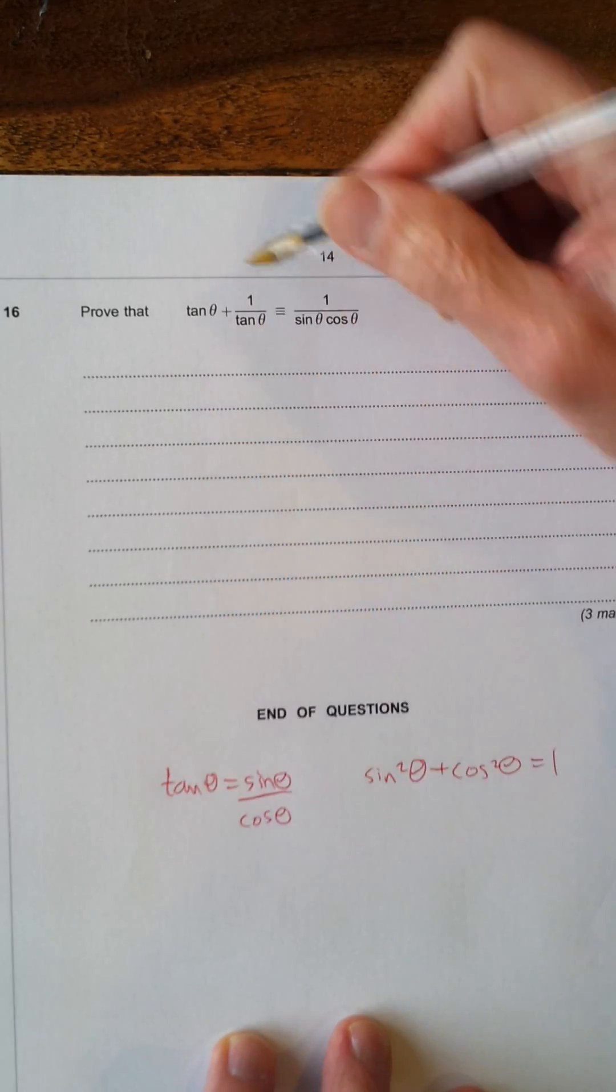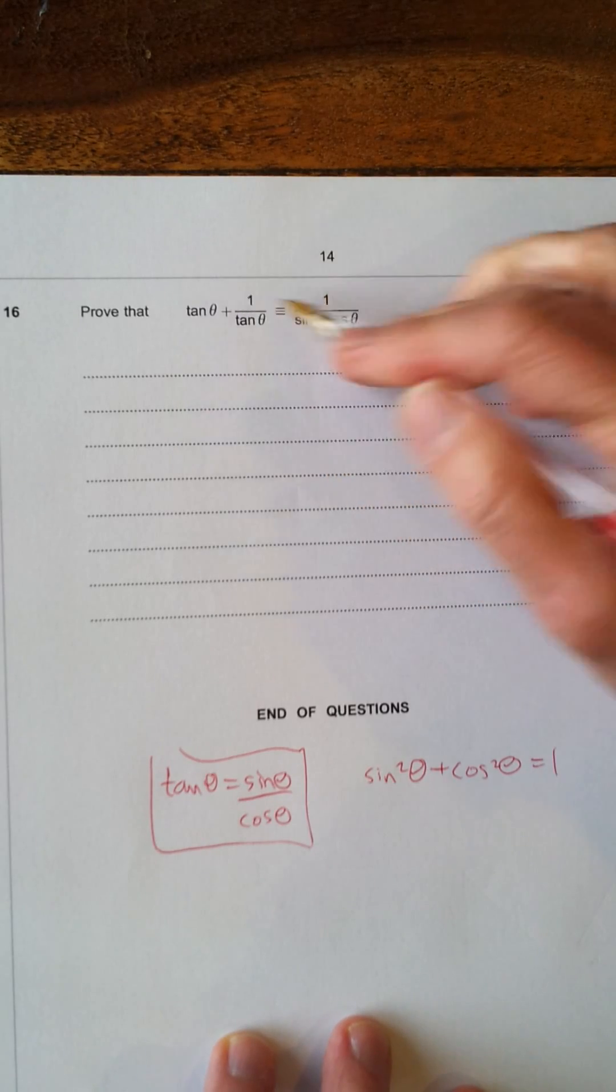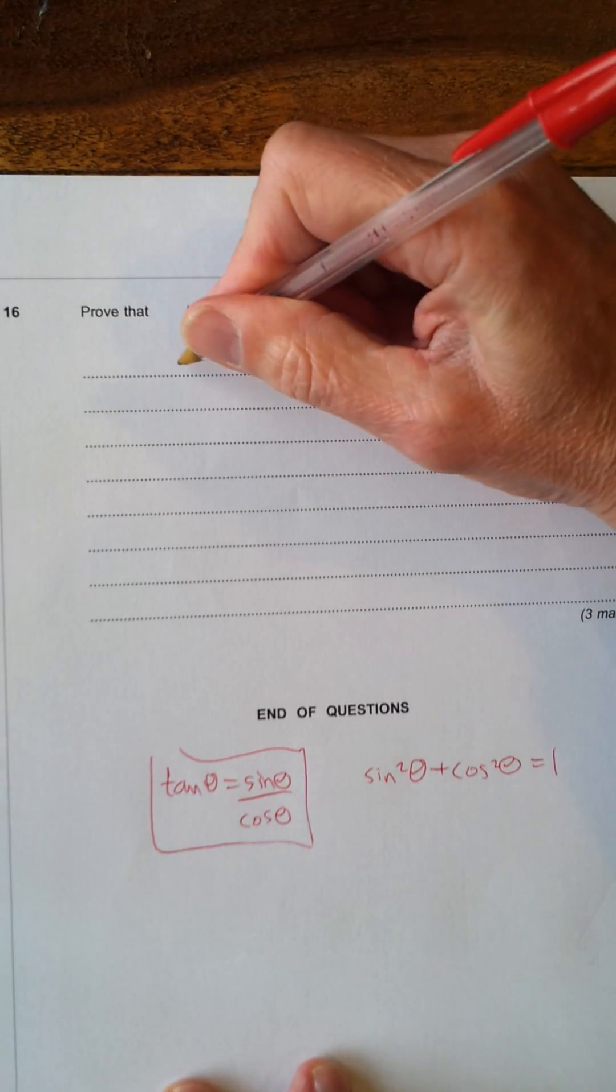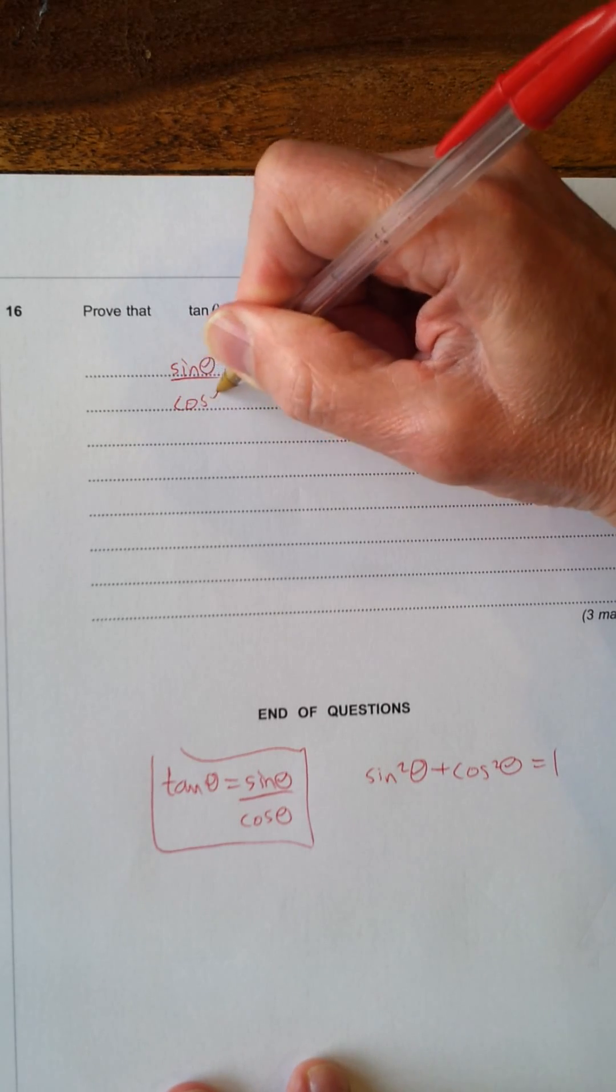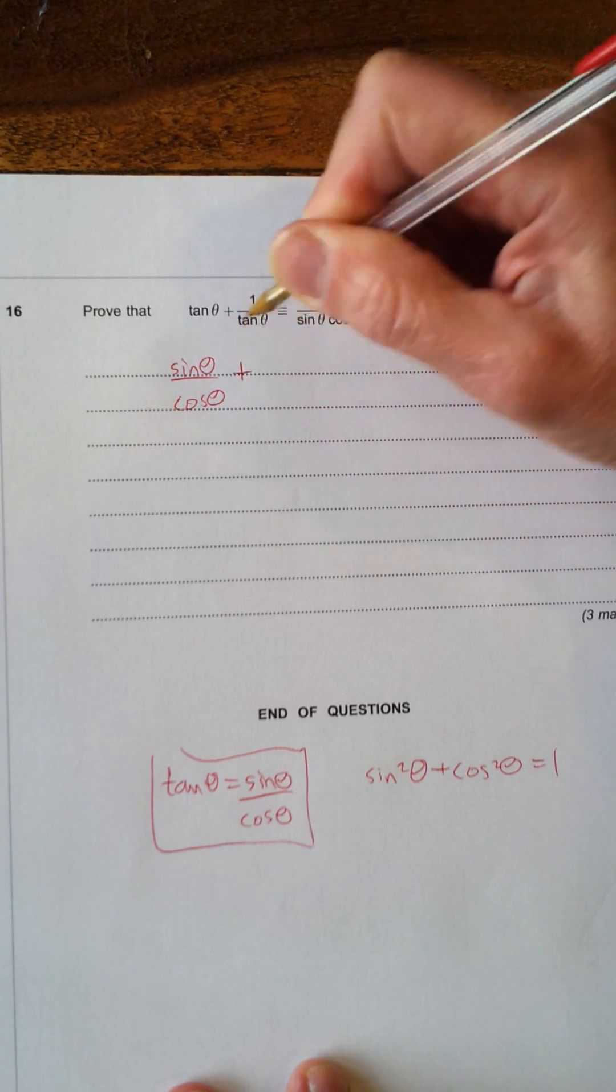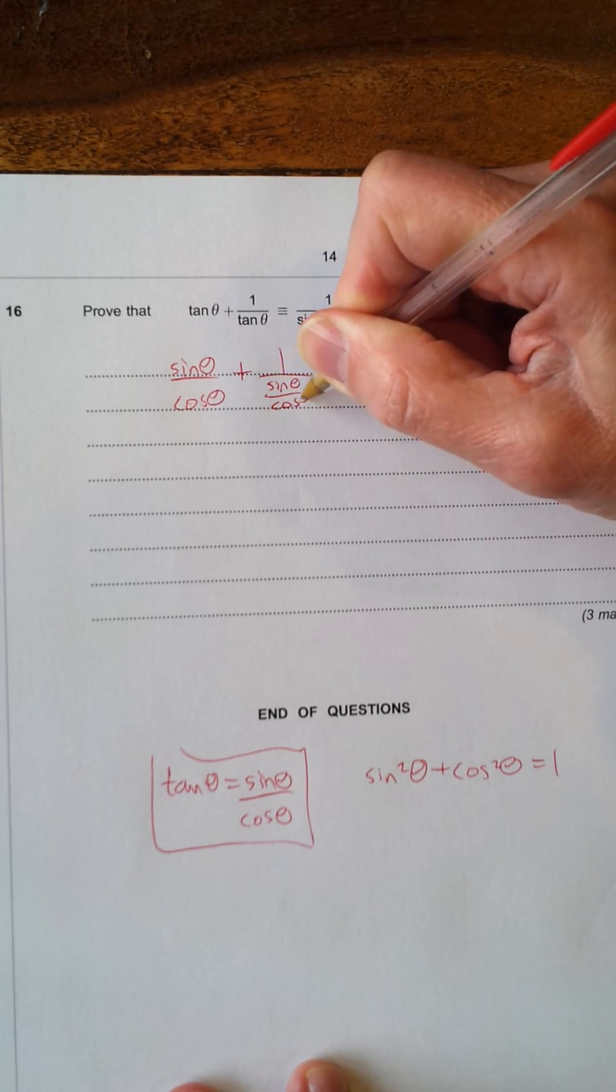So, looking at that, we've got tan θ here equals sin θ/cos θ. So, I'll just substitute that in each term. So, I've got sin θ/cos θ + 1/(sin θ/cos θ).